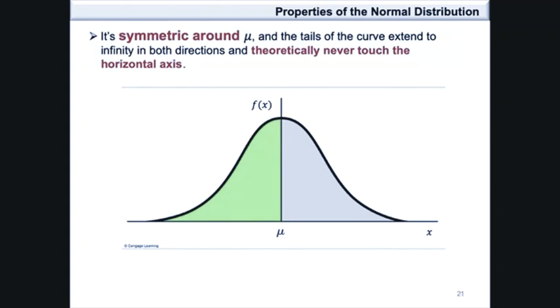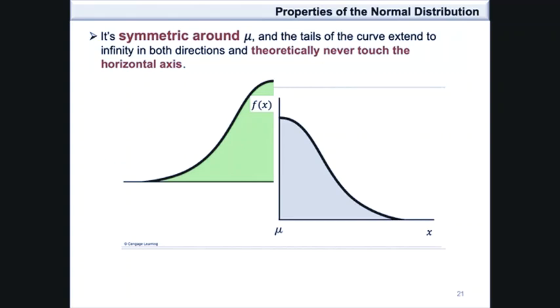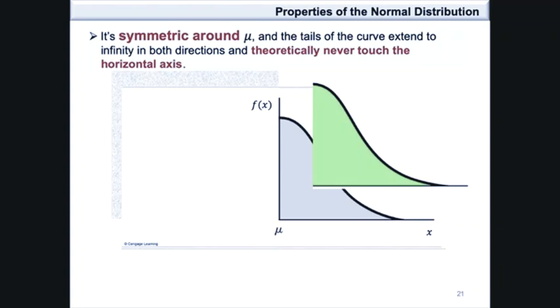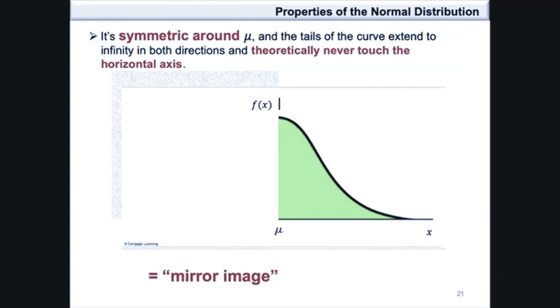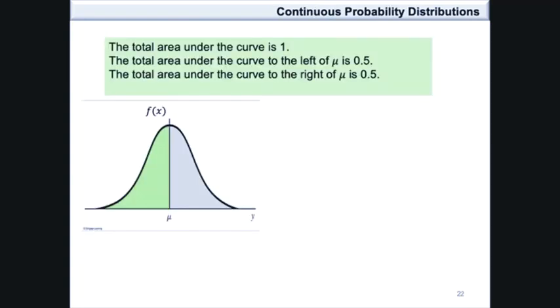The normal distribution is symmetric around μ, and the tails of the curve extend to infinity in both directions and theoretically never touch the horizontal axis. If the probability density curve is folded around the mean such that the area to the left lies on top of the area to the right, it will be a perfect fit. This shows that the two halves are mirror images of each other. The total area under the curve is 1, and therefore the total area under the curve to the left of μ is 0.5, which is equal to the area under the curve to the right of μ.